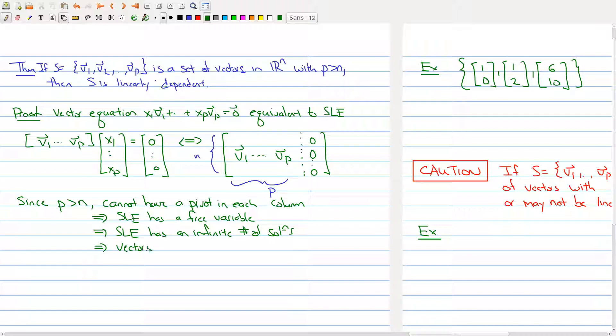So, the vectors are linearly dependent, because that means that we're going to find at least one non-trivial solution to this system. It's a very handy theorem to have around, because it tells us, just by counting the number of vectors, whether we can determine if it's linearly dependent.